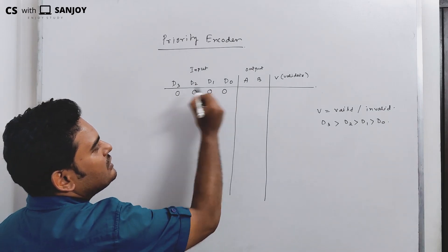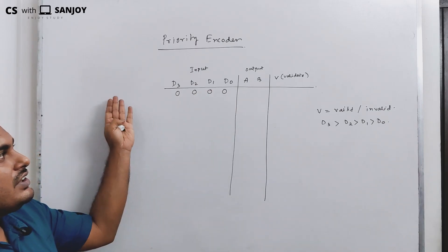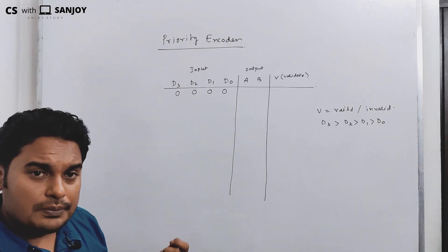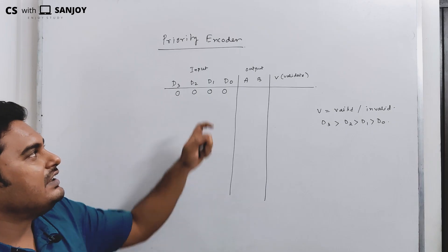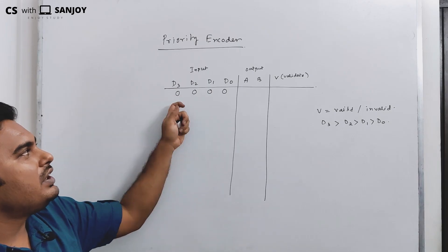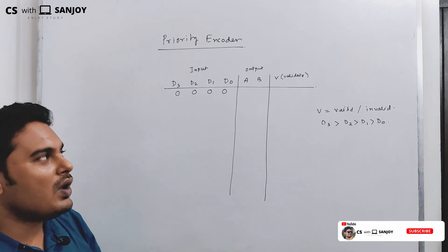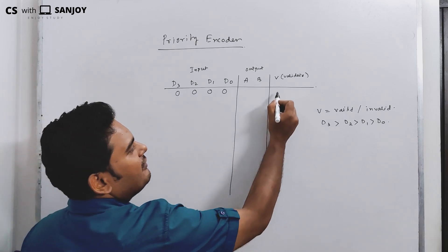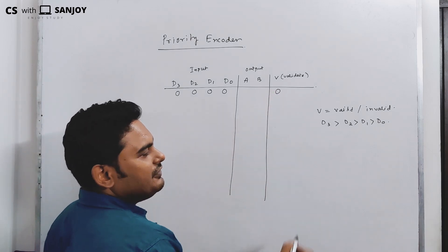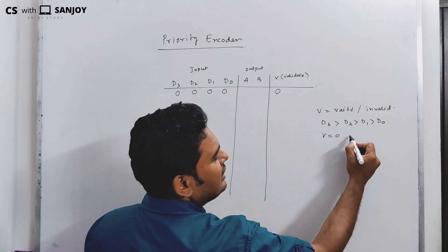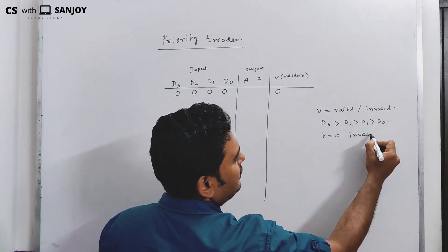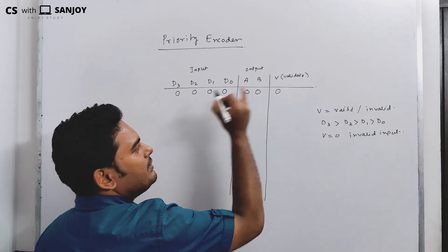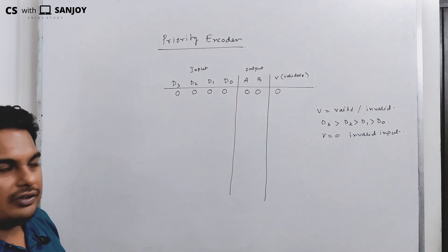The input initially will be 0, 0, 0, 0. When all inputs are 0, that is an invalid input — none of D0, D1, D2, or D3 is 1. So valid V equals 0, indicating invalid input. The output A, B will be 0, 0.